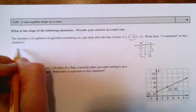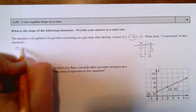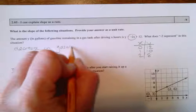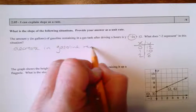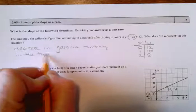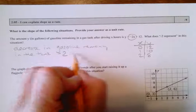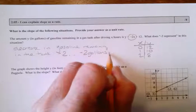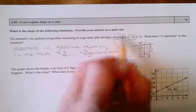It's the decrease in gasoline remaining in the tank. Negative two is negative two gallons per hour.